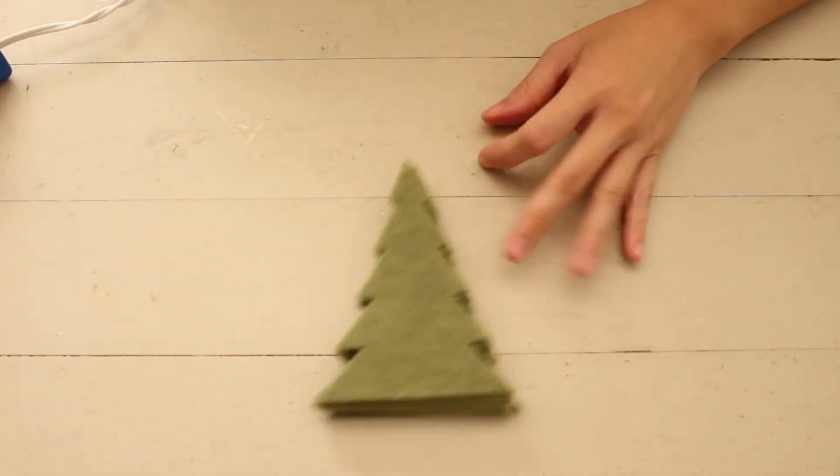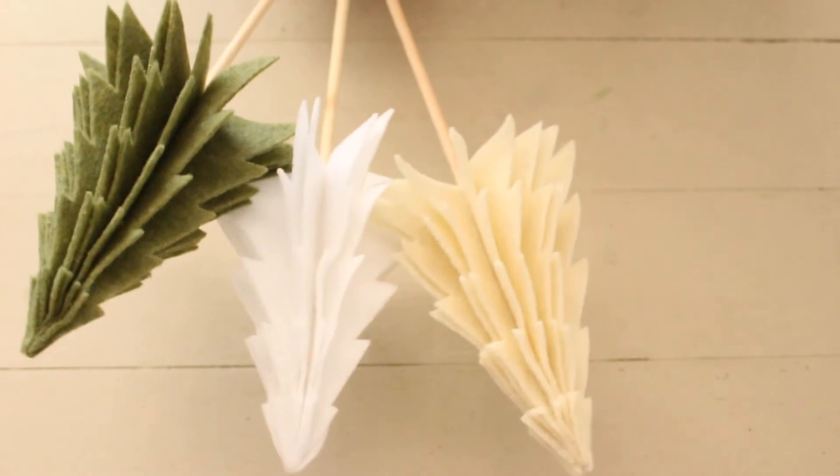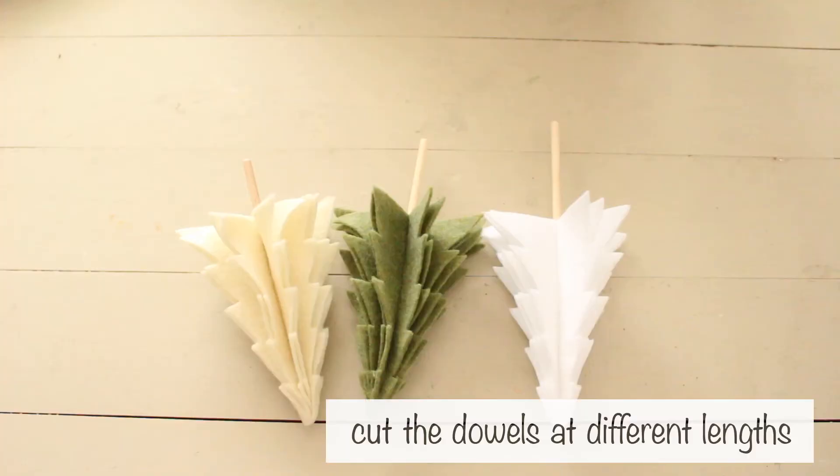I made 2 other trees in the colors olive green and antique white. I cut the dowels in different lengths.